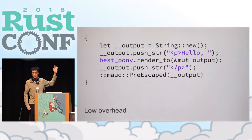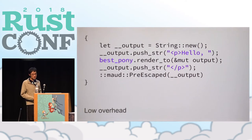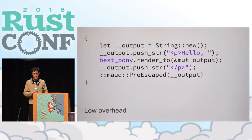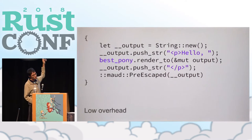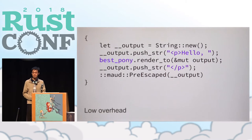If you were to run something like cargo expand to view the code that Maud generates, you'd see something similar to this. The real code is a bit more complicated, but essentially all it does is create a new string object, push a bunch of literals to it, and the render_to method does HTML escaping. Other than that, there's not much to that code.